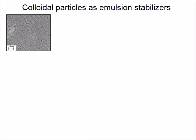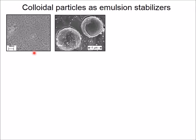On the following slides, we are going to discuss the chemical and physical origins of why colloidal particles can be used as emulsion stabilizers. An example of such colloidal particles can be seen in this electron micrograph. We see a bunch of 20 nanometer silicon dioxide particles.